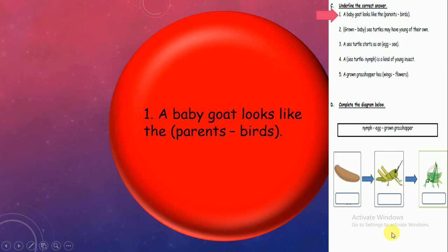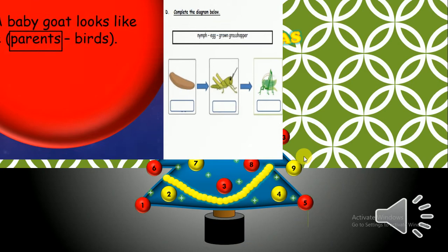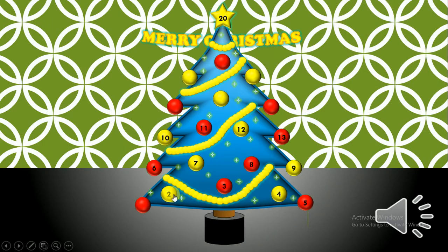This is choose or underline the correct answer. You're gonna find it on page 62. Number 1: Baby goat looks like their parents or birds. Baby goat looks like mother and father, so it's parents. Super! Let's try number 2.